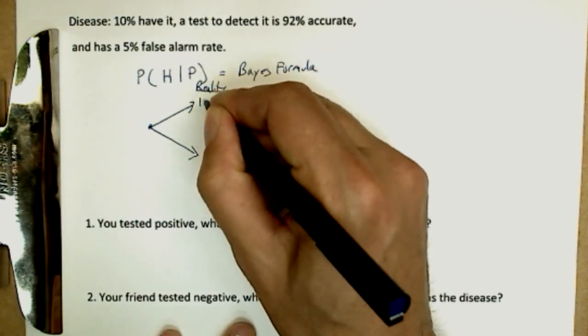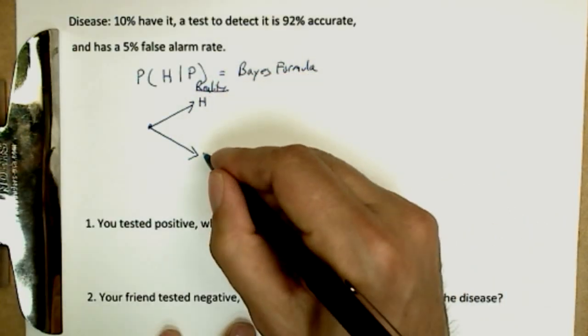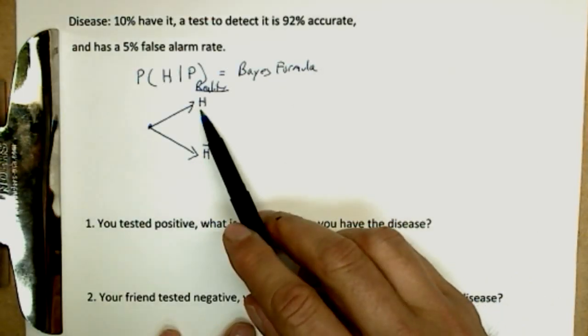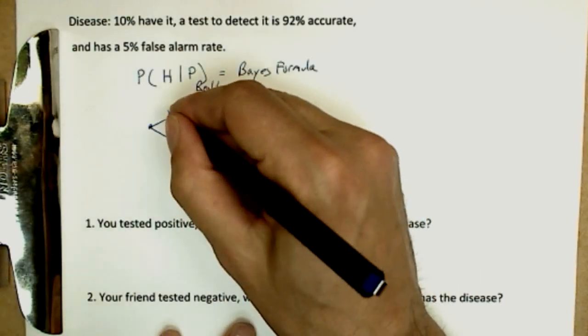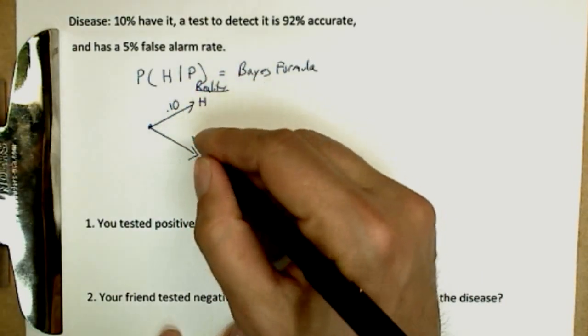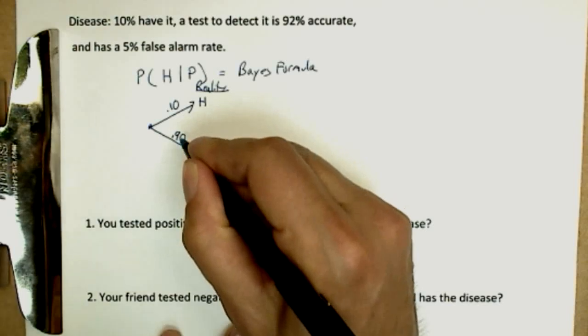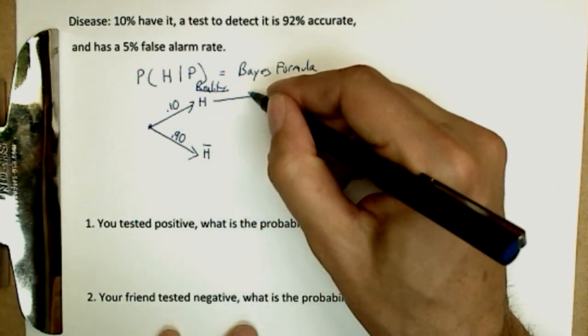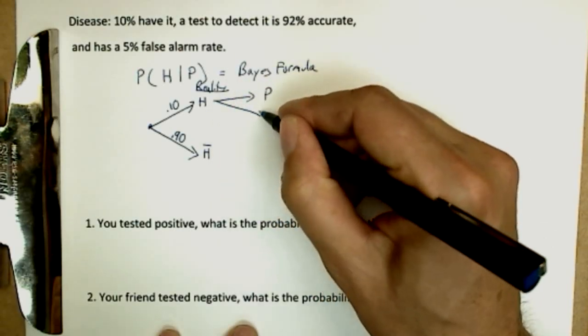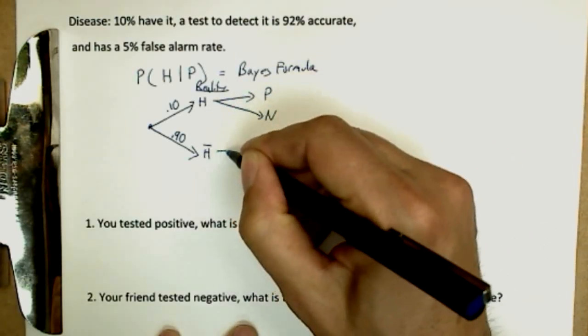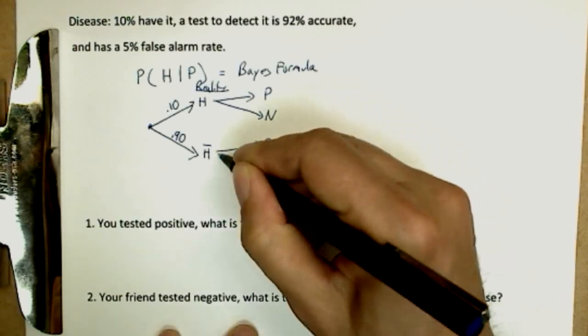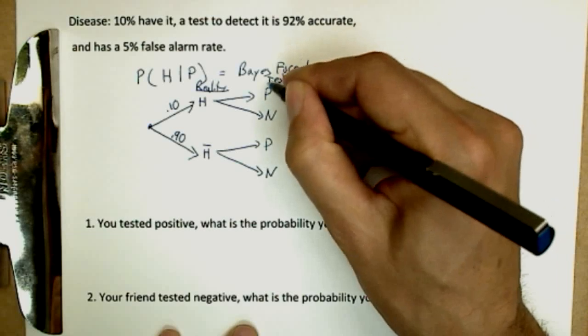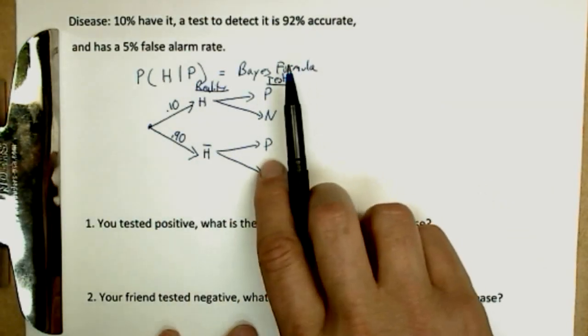You either have the disease or you don't. So don't have it. Block over H is not having the disease. So what's the probability you have the disease? Well, 10%. Then obviously the probability you don't have the disease is 90%. Now in either case, you can test two different ways: positive, negative. So this is dealing with our test of the condition. So here's reality, here's our test.